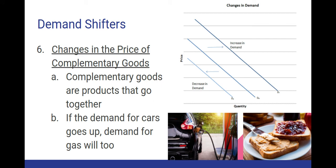The final demand shifter is changes in the price of complementary goods. Complementary goods are products that go together, like cars and gasoline, peanut butter and jelly, or hot dogs and hot dog buns. If the demand for one goes up, the demand for the other will also go up. If it becomes much cheaper to produce cars and more people can buy them, the demand for gas will go up too. Vice versa, if there's an oil crisis and gas prices go way up, people won't want to drive as much, so they won't be buying new cars — or if they do, they'll buy fuel-efficient cars rather than SUVs and trucks.